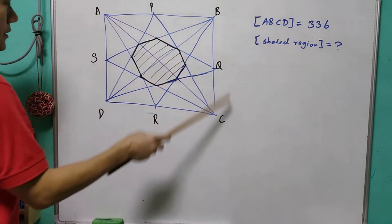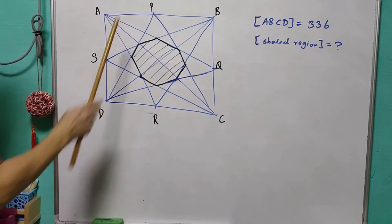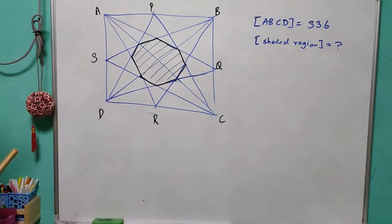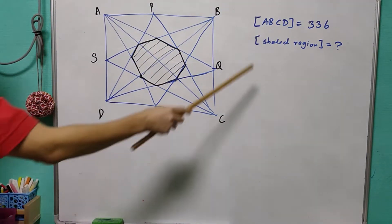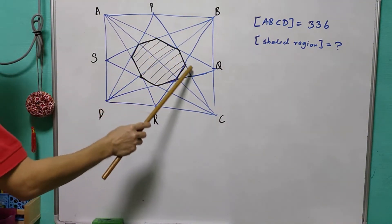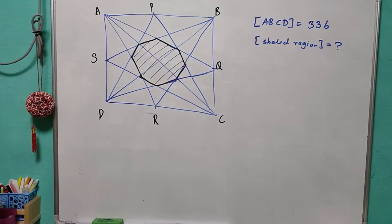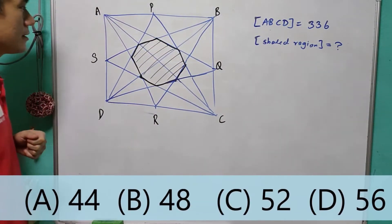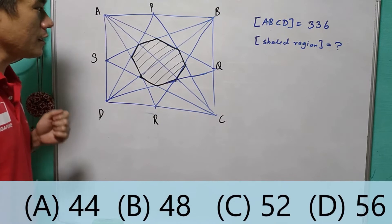Given that ABCD is a square, PQRS are the points on its sides, and the area of ABCD equals 336. What would be the area of the shaded regions? The options are A, 44, B, 48, C, 52, and D, 56.